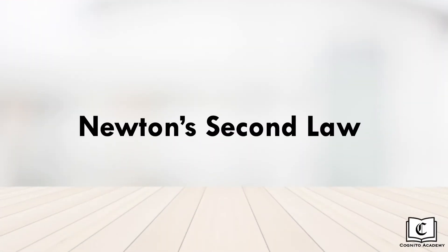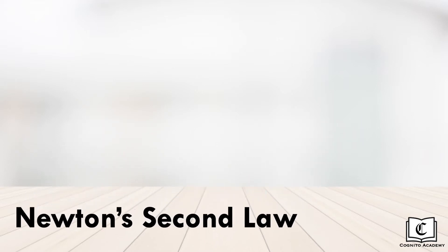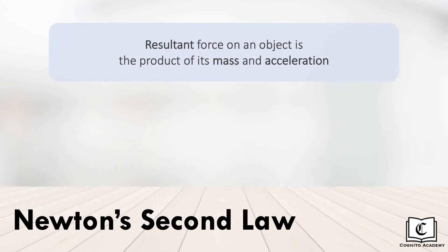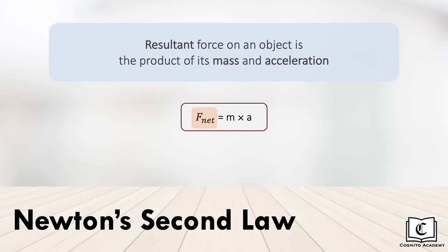Next, we have Newton's second law of motion, which states that the resultant force on an object is the product of its mass and acceleration. The force that results in the acceleration of the object is the net force — the net result or resultant of all individual forces combined that were acting on the object.